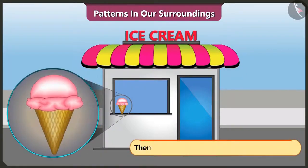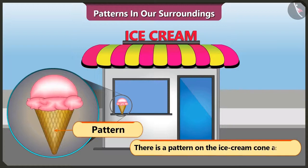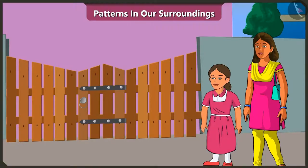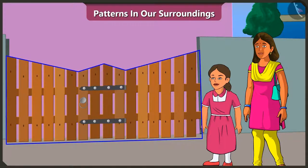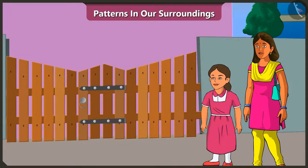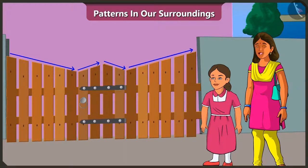And the ice cream cone also has a pattern. Yes, Vinny. We talked all the way and reached home so soon. Hey, the door of our house also has a pattern. Rightly said, Vinny. The strips here have a pattern of big to small, small to big — initially big to small, and then small to big strips have been used.